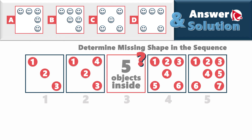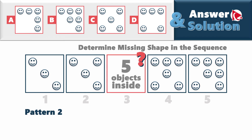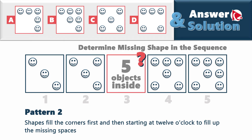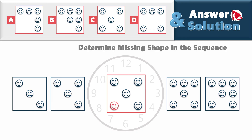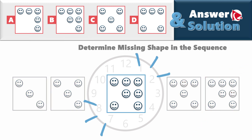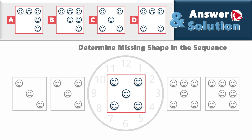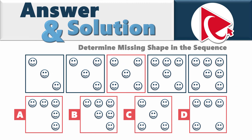We find the answer by identifying the second pattern: shapes fill the corners first, and then starting at 12 o'clock, they fill up the missing spaces. In shape 3, the missing smiley face would be at 7 o'clock. In shape 4, the new shape shows up at 12 o'clock, and in shape 5 it would be at 3 o'clock. Continuing the pattern, a hypothetical shape 6 would have a smiley at 6 o'clock. This means the new smiley face appears at 7 o'clock in shape 3, and the correct answer is choice C.